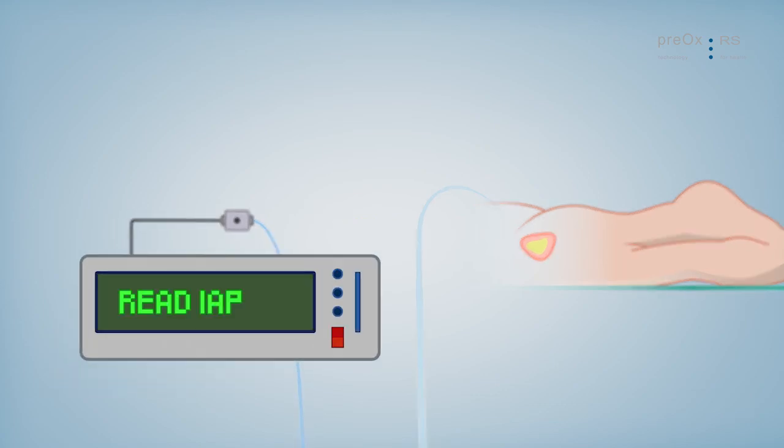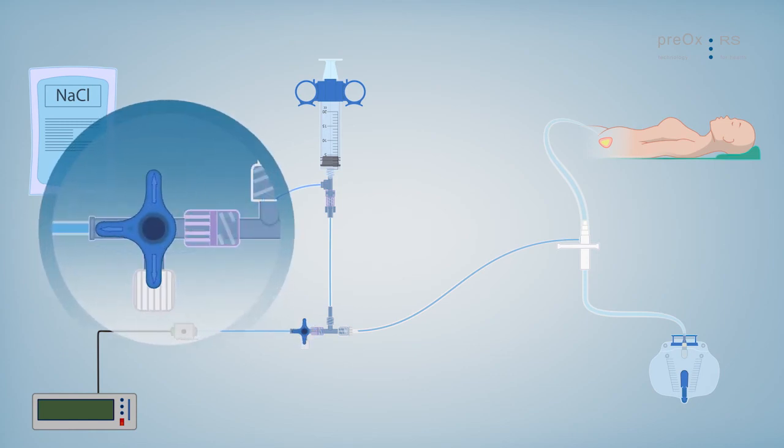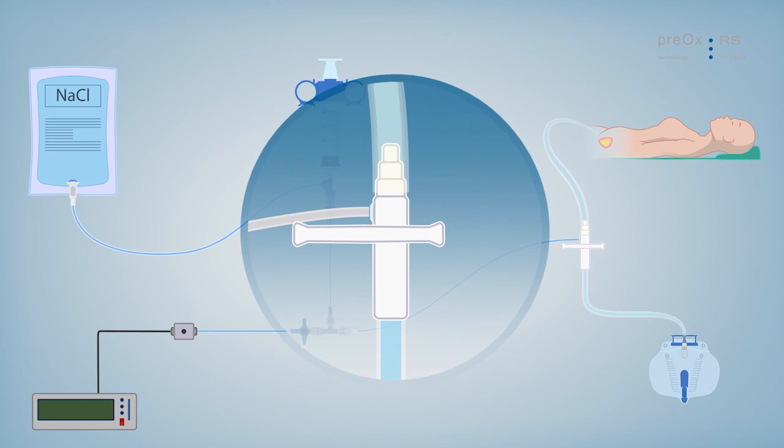Now you can read the intra-abdominal pressure from the monitor. Close the three-way stopcock and open the white clamp of the IAP adapter.